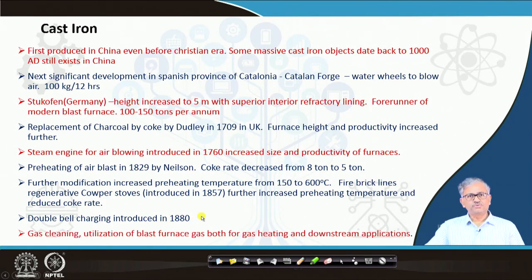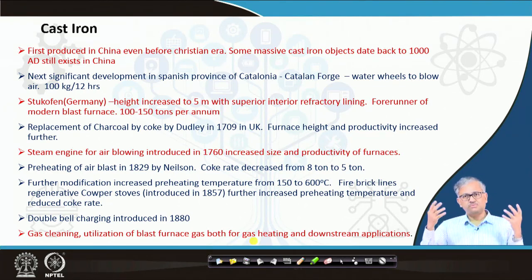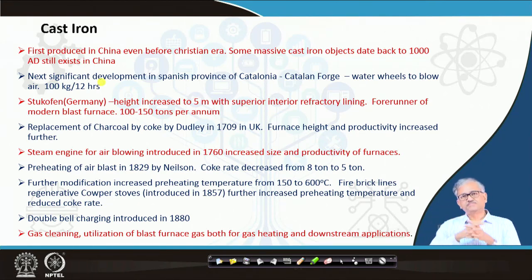Then gas cleaning — with the electrostatic precipitator — became more effective, and then utilization of blast furnace gas for gas heating in the Cowper stove as well as downstream applications came. Further development — the modern blast furnace development, how the coke rate decreased over time — I have already discussed. So this is how the cast iron evolved over time, starting from the pre-Christian era in China and progressively moving to Europe with lots of development.